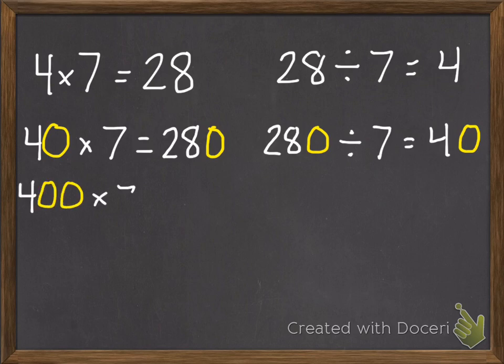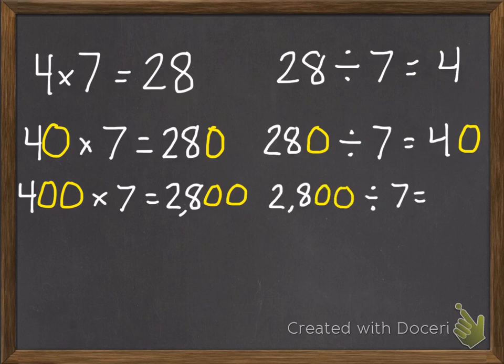We can continue this pattern. 400 times 7 is 2,800. If we have 2,800 divided by 7, we're going to have 400.